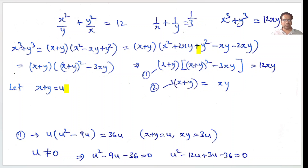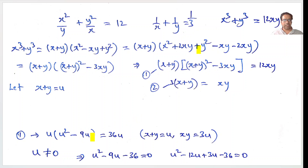Let us assume x plus y equals u, just for simplification so the equations don't look lengthy. That gives us u times u squared minus 3xy equals 12xy. From the second equation, xy equals 3 times x plus y, which means xy equals 3u. Substituting, u times u squared minus 9u equals 12 times 3u. We have converted everything into u, where u equals x plus y.